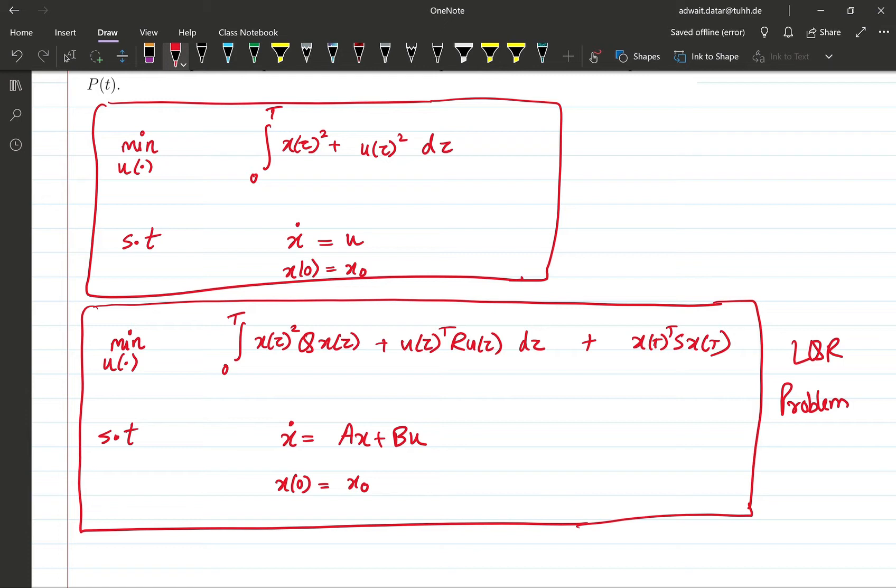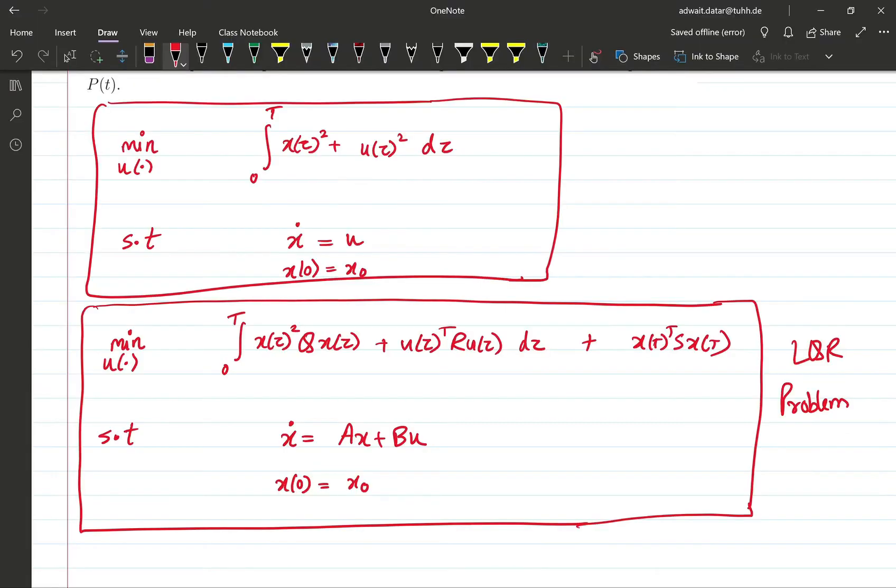Now for this problem to be reasonable, there are some conditions on matrices Q, R and S. Q has to be positive semi-definite, S has to be positive semi-definite, and R has to be positive definite.